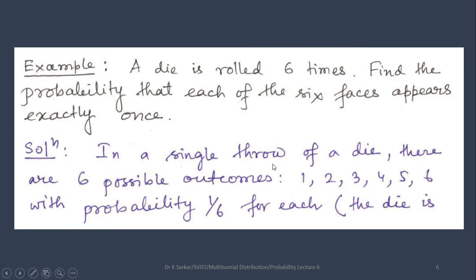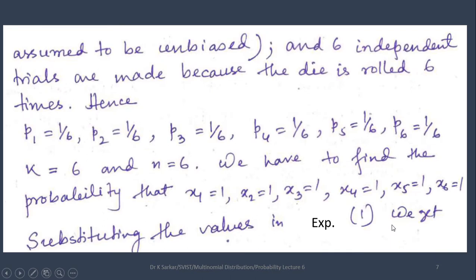In a single throw of a die, there are 6 possible outcomes as you know: 1, 2, 3, 4, 5, 6 with probability 1 by 6 for each. The die is assumed to be unbiased. And 6 independent trials are made because the die is rolled 6 times.